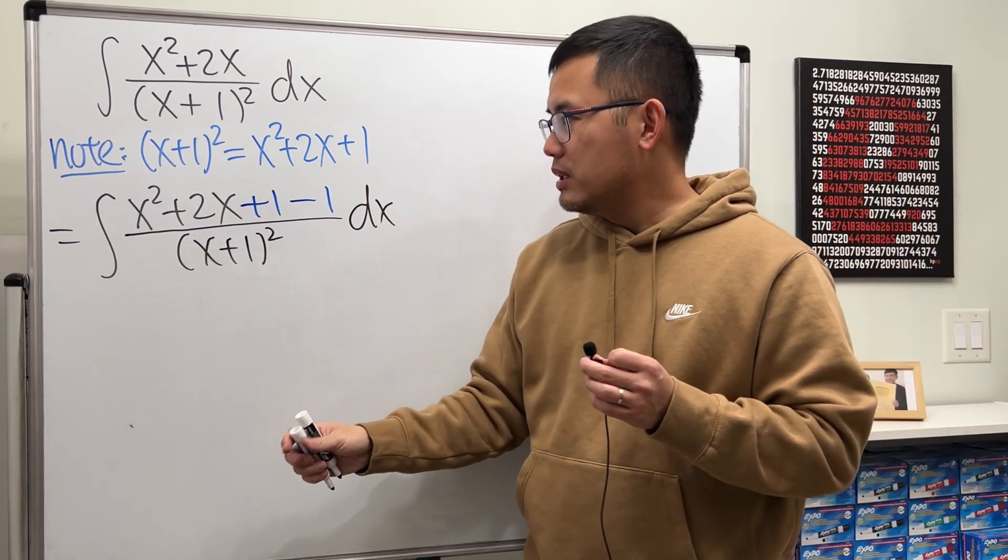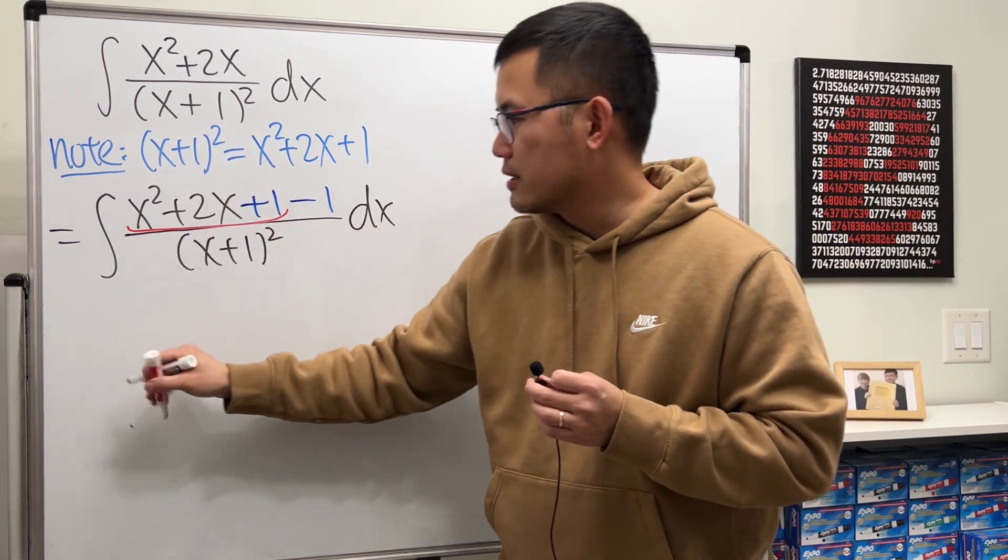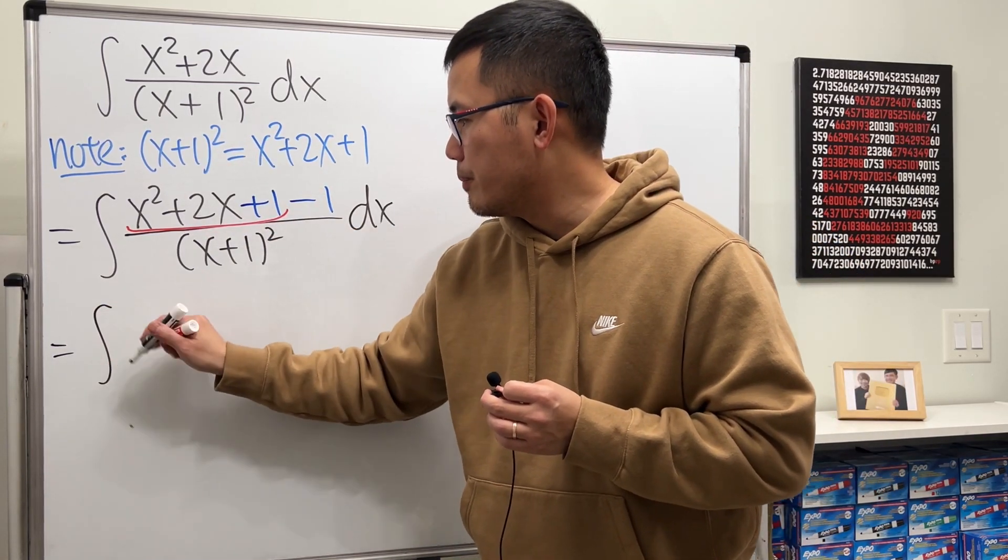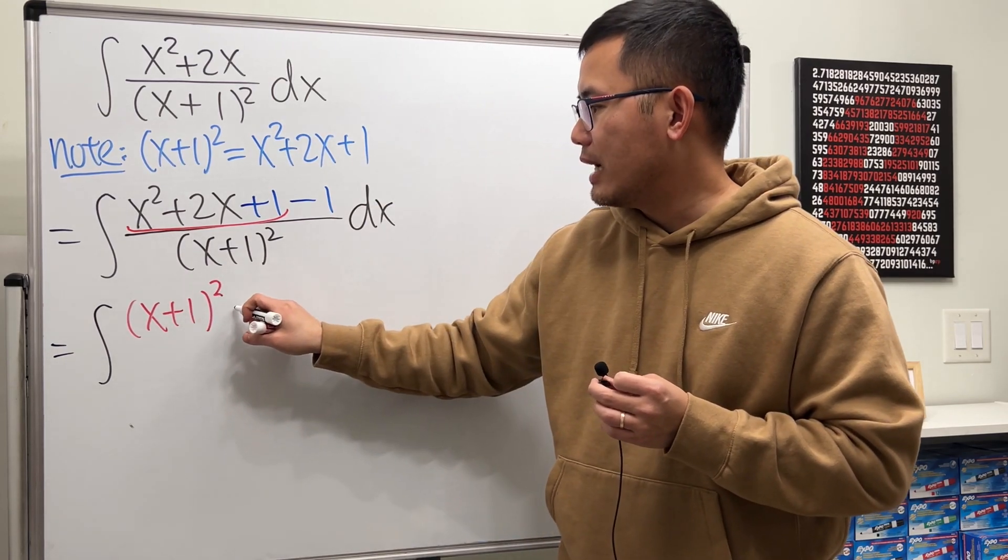And when we do this, we will see the first three terms, it's exactly that. So it becomes integral, x plus 1 squared. And then after that, we have minus 1.